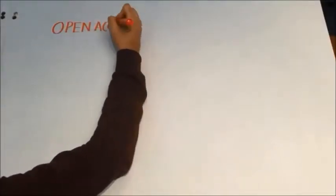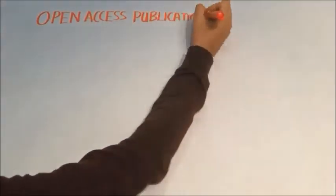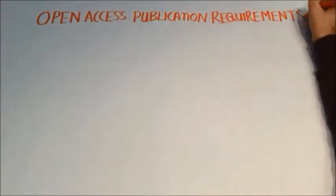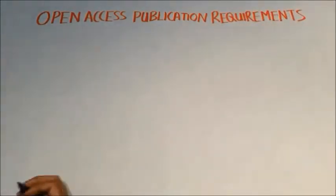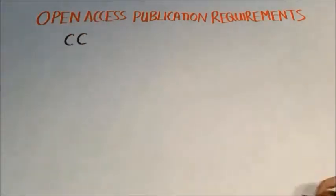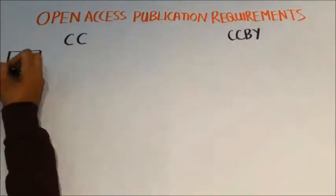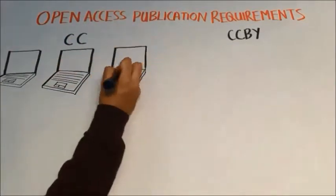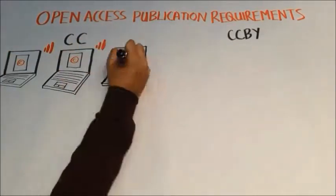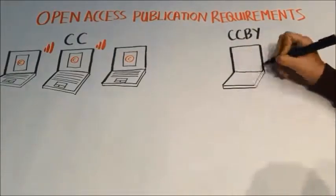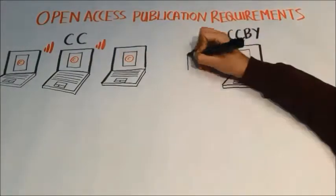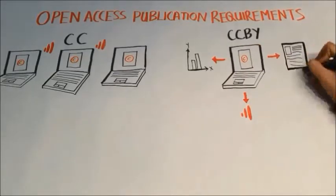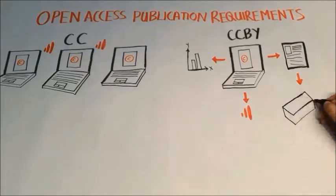Innovators funded by Grand Challenges Canada who publish their findings must do so under a Creative Commons Attribution License, also called a CCBY license, or a public license with equivalent terms, and the published work must be immediately openly accessible. A Creative Commons license is a public copyright license that enables the free distribution of an otherwise copyrighted work. A CCBY license permits unrestricted reuse, distribution, and reproduction in any medium, including for commercial purposes, as long as the original work is properly attributed.